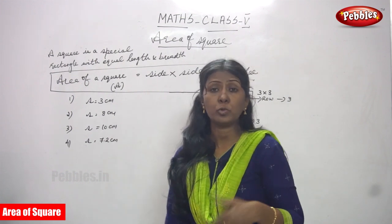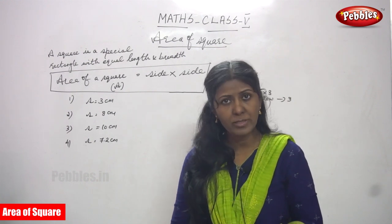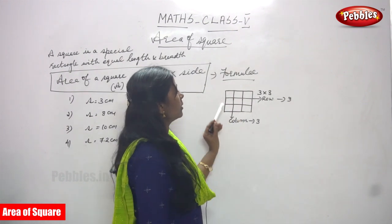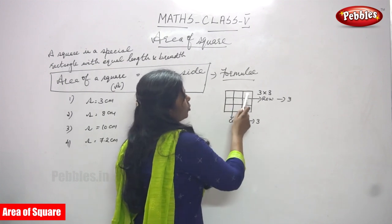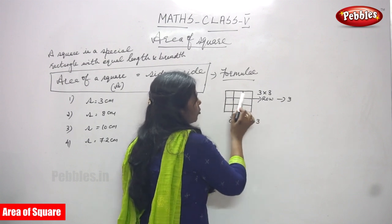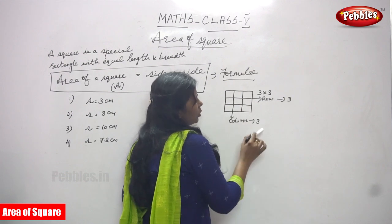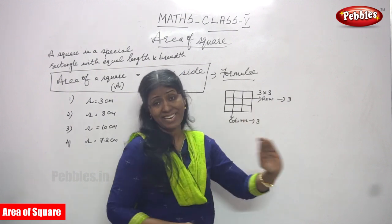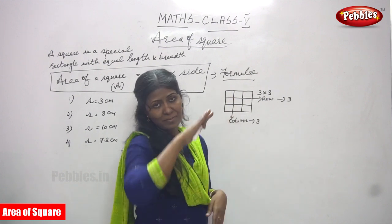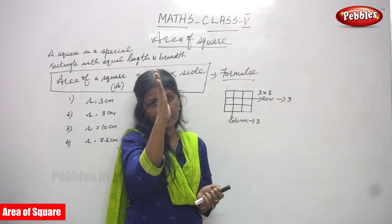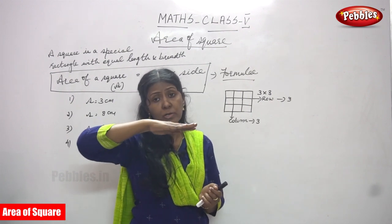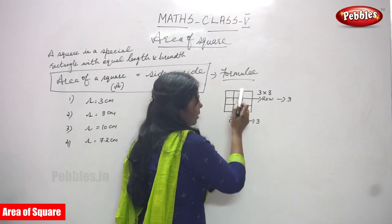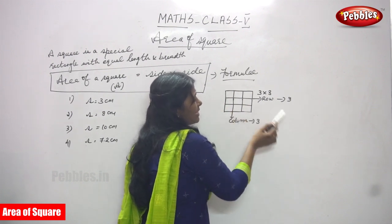Now we are going to do problems to clarify all doubts and become thorough in the concept. Before solving, let's look at this diagram. It is a square — one, two, three rows and one, two, three columns. Three rows and three columns. Horizontal lines are called rows and vertical lines are called columns.